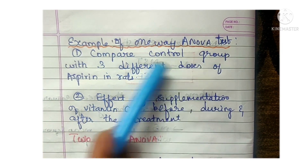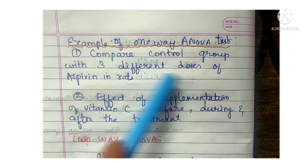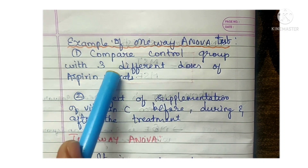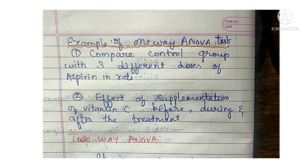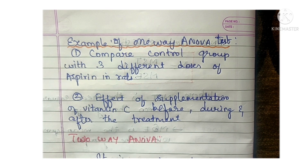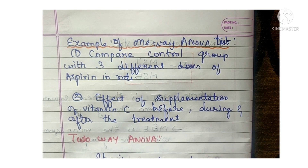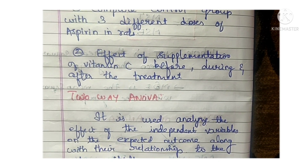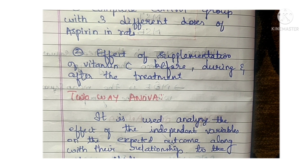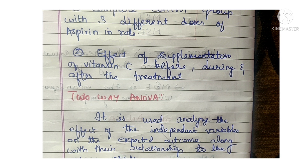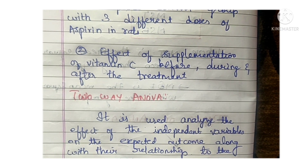An example of one-way ANOVA is comparing a control group with three different doses of aspirin in rats — 50 mg, 75 mg, and 150 mg — and comparing the effect of each dose. Another example is studying the effect of vitamin C supplementation before treatment, during treatment, and after treatment to see what impact it has at each stage.